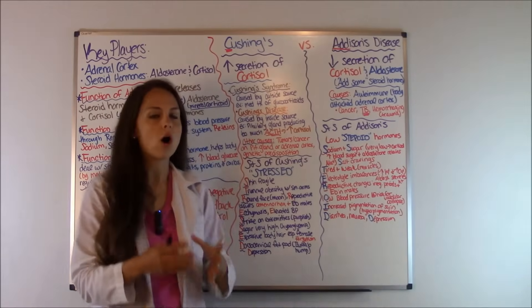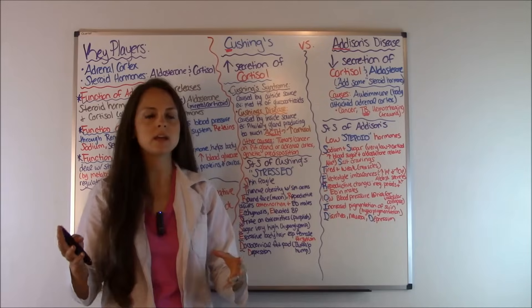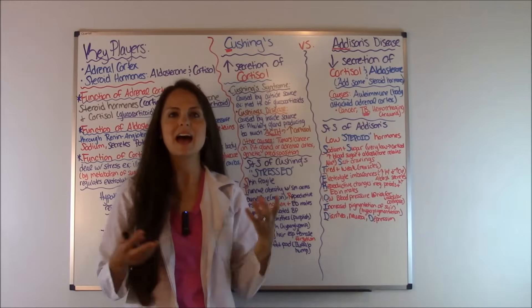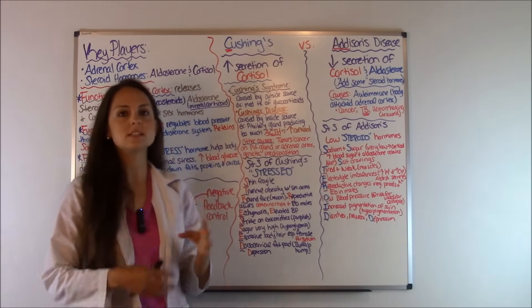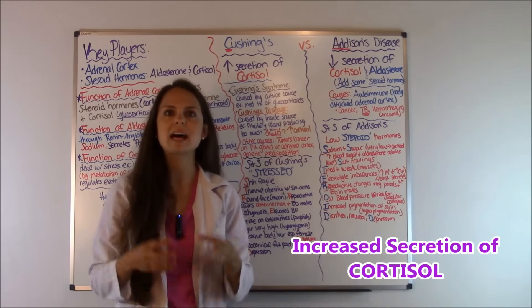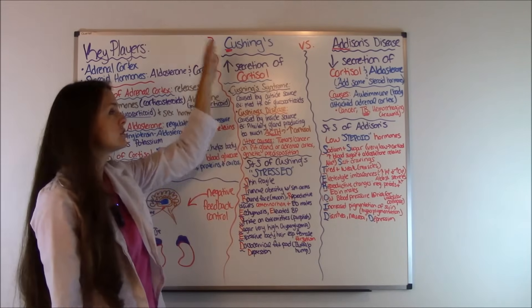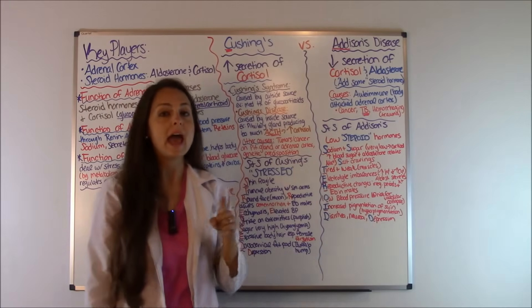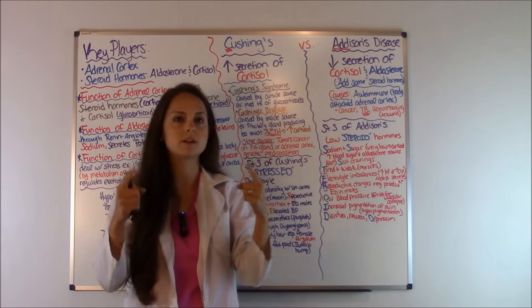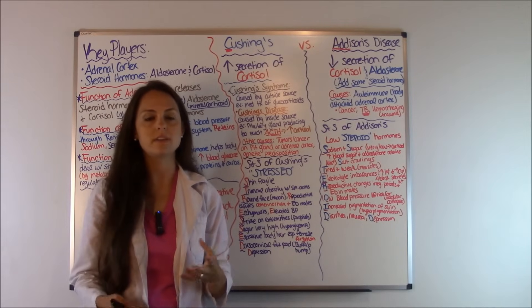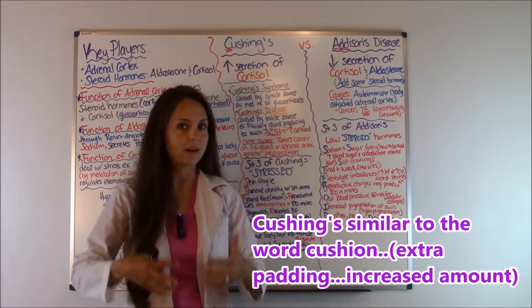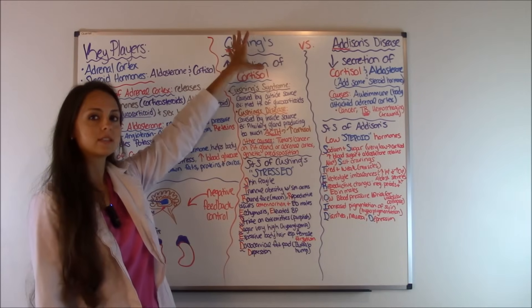The biggest thing that confuses people on Cushing's and Addison's is knowing which hormone is elevated and which is not. Cushing's starts with a C, and in Cushing's you have an increased secretion of cortisol — that stress hormone. Cortisol starts with C, Cushing's starts with C, and it's just dealing with that one hormone. Think of Cushing's like a cushion — you have a lot of padding, a lot going on — so remember that you have an increased secretion of cortisol.